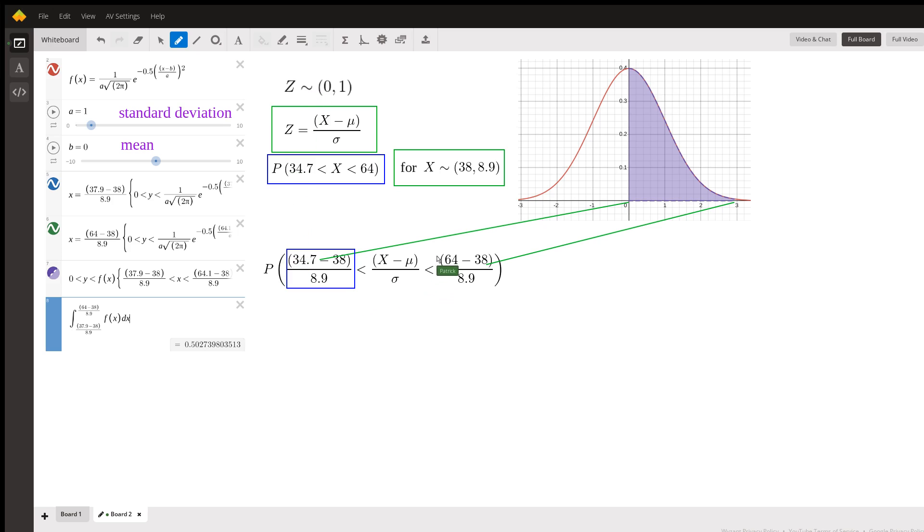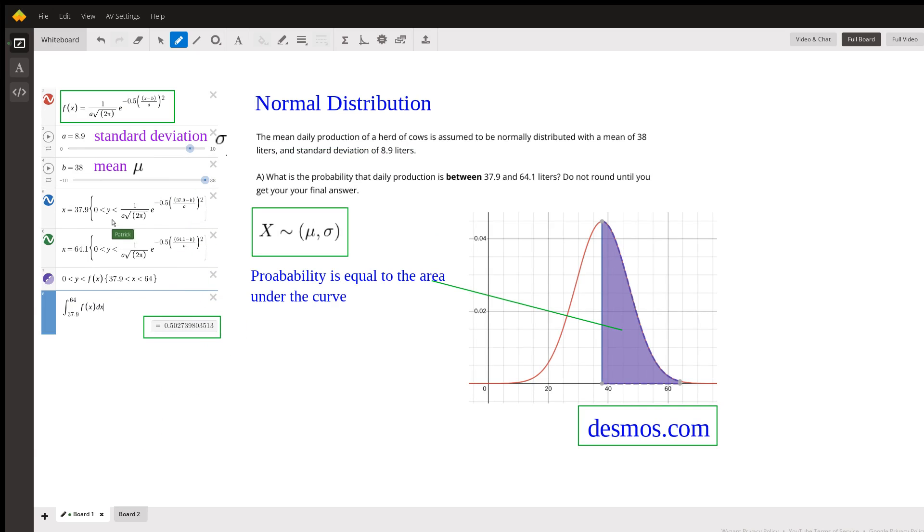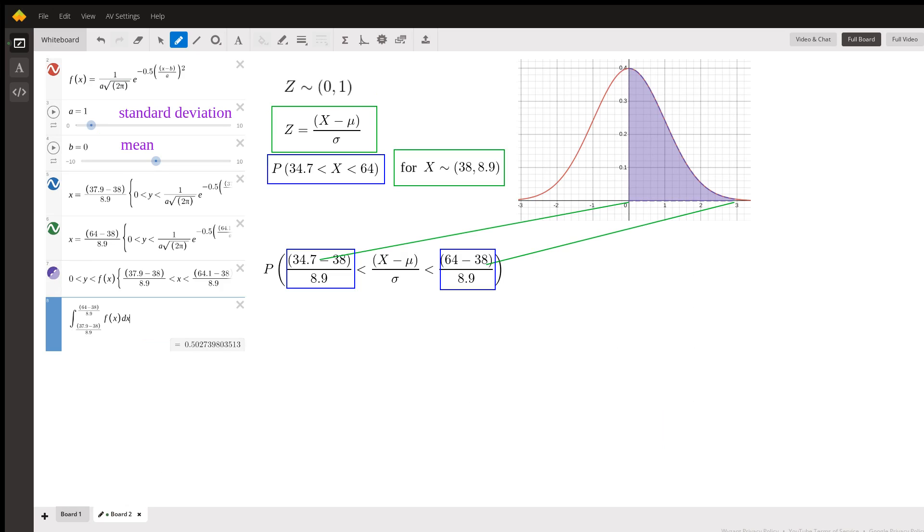And if you were looking it up on a table, you might have to go through some other things, but that is basically what you need. I think you will probably have a calculator that you can just input these things. Either way, it's useful to do both. See if you can convert it to the standard normal distribution.